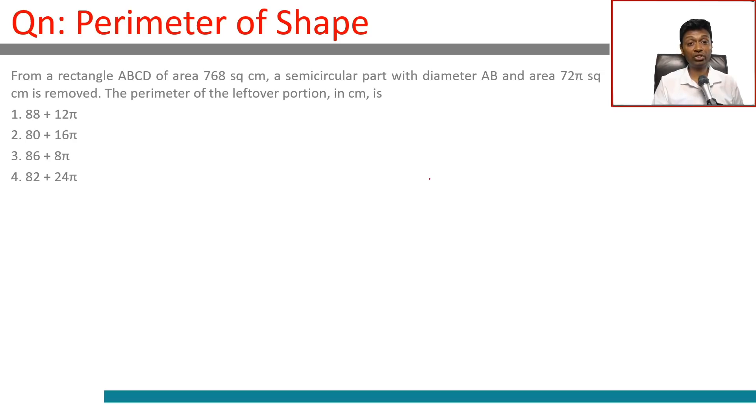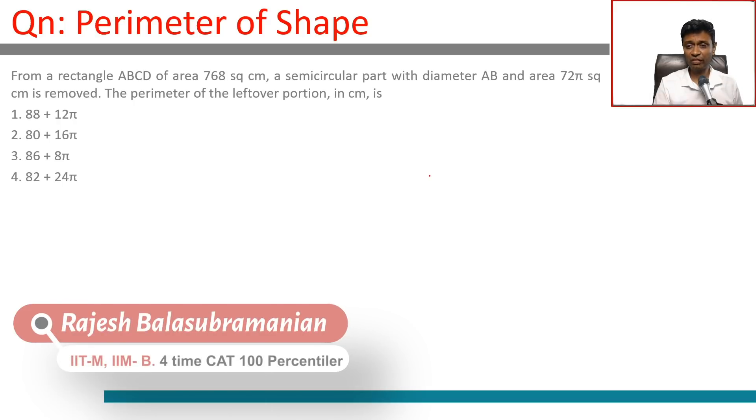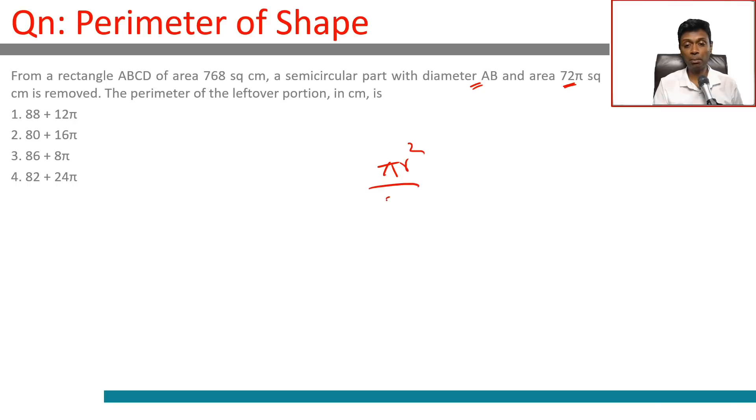From a rectangle ABCD of 768 square centimeters, a semicircular part with diameter AB and area 72π square centimeters is removed. The area formula is πr²/2.